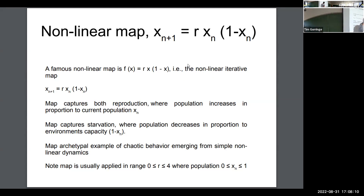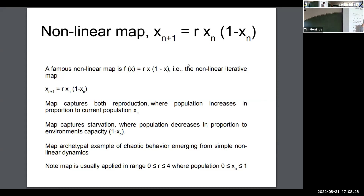This is a much more realistic map. This function is non-linear — there's a term proportional to x and a term proportional to x². This function, like the last one, has a parameter R, which is something like a reproduction rate. And here is the iterative map — this is the famous logistic map.